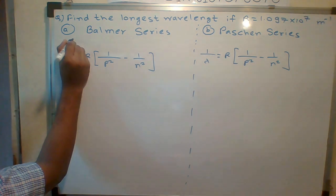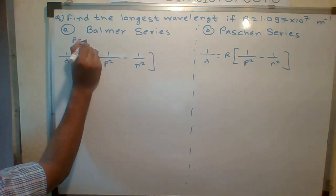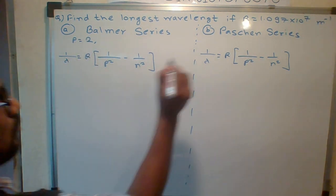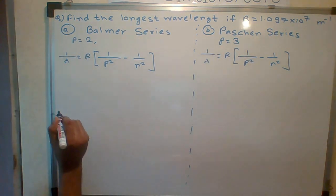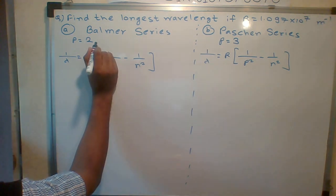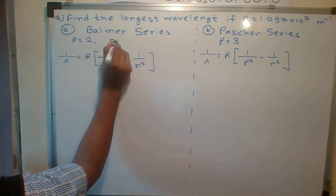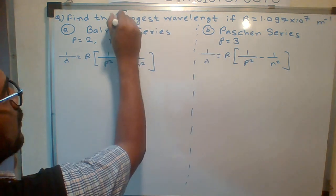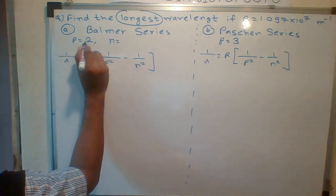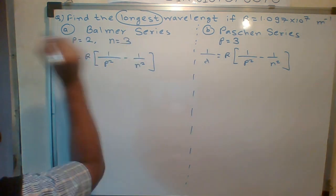p is always 2 for Balmer. For Paschen series, p is 3. Now, for longest wavelength, n will be 3, 4, 5, 6. This means that for longest wavelength, n is always the next number after p. For p=2, the next number is n=3.